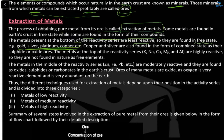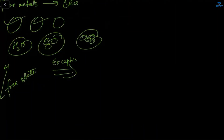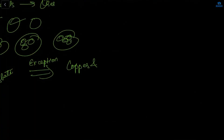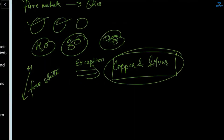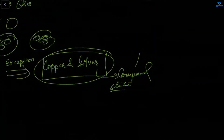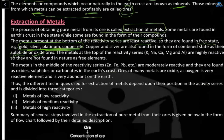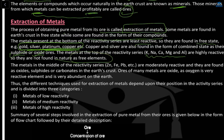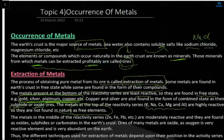Metals found below hydrogen in the reactivity series — gold, silver, platinum, copper — are present in the free state. However, copper and silver are exceptions: they are also found in a combined state as sulfide or oxide compounds. Metals at the top of the reactivity series are highly reactive and are always found in compound form.